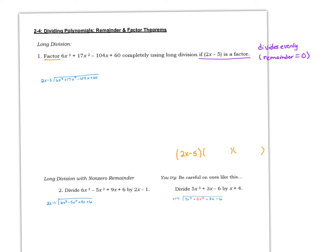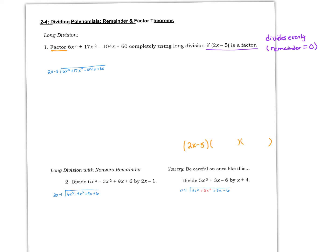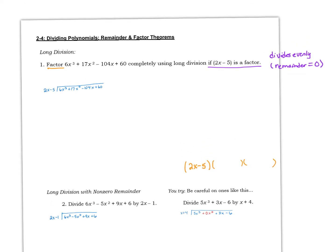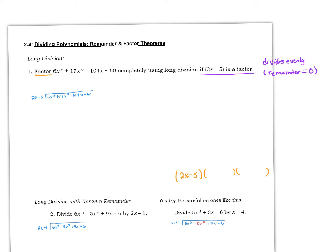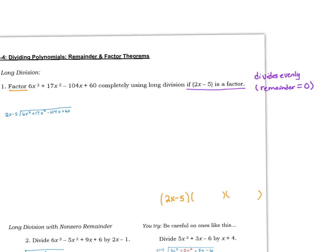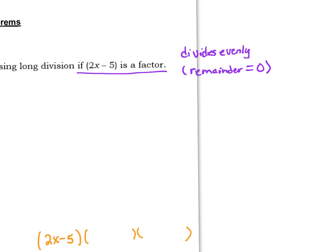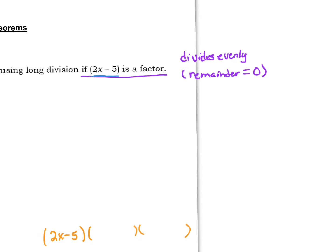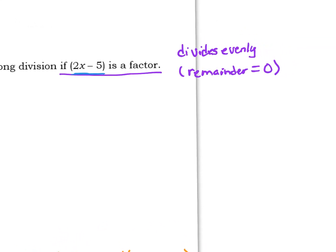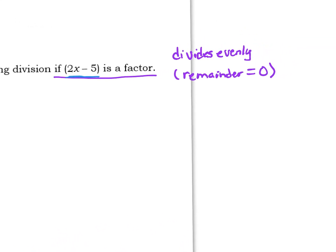For the first examples on this front page, we are looking at long division. The directions say factor this polynomial completely using long division if 2x minus 5 is a factor. If a particular expression is a factor, it means that this factor will divide evenly into the large polynomial, which means we will not have a remainder. The remainder will just be 0.